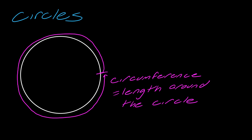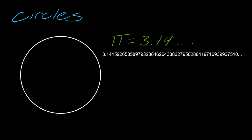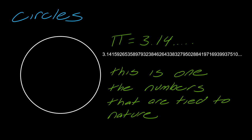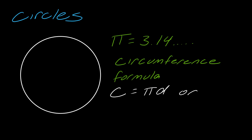Circumference is measuring the length around the circle. To calculate circumference, we need pi. Pi is an amazing naturally occurring number that pops up in nature — something we discovered rather than made up. The circumference formula is c equals pi·d or 2·pi·r. This makes sense because the diameter is two times the radius, so you can use either form. For our calculations, we'll use 3.14 as our approximation for pi.